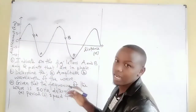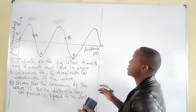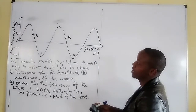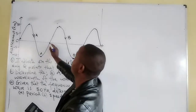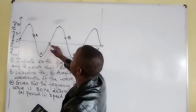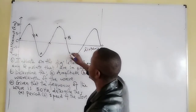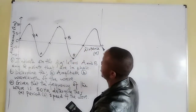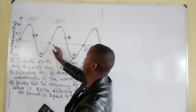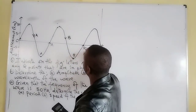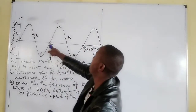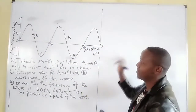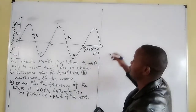Any pair of points can qualify as long as at those two points the particles are going in the same direction. The wave should flow until we reach the same position going in the same direction — those are points in phase, moving in the same direction at the same position.